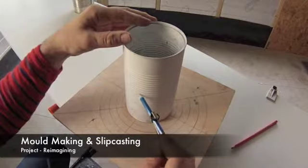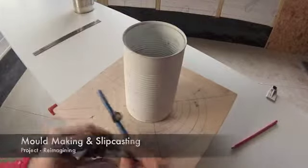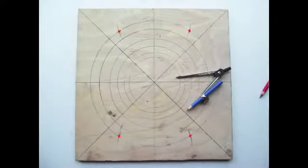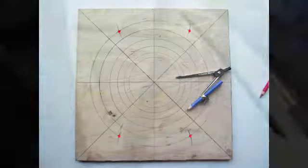First of all, you need to create a baseboard with consecutive rings radiating out from the centre, marked with a compass. So the materials you need are very simply a compass, a piece of wood, and a ruler.